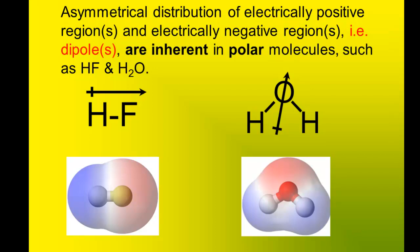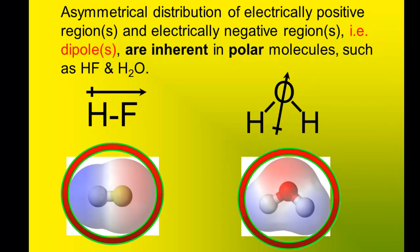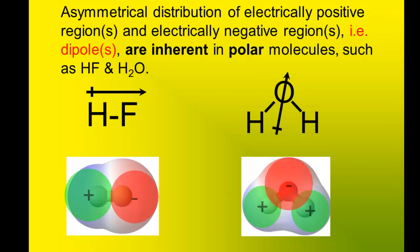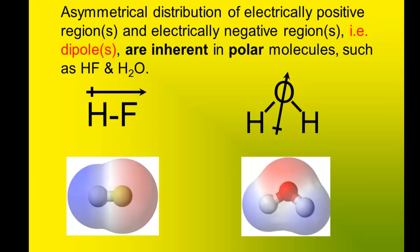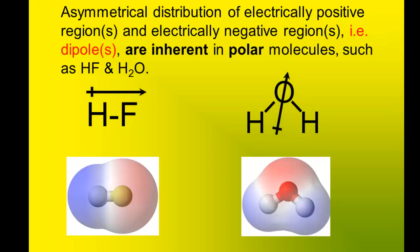Asymmetrical distribution of electrically positive regions and electrically negative regions — i.e., dipoles — are inherent in polar molecules. Hydrogen fluoride and water are two examples. There are Lewis structures of HF and water, and below each Lewis structure is an electrostatic potential map. These maps show electrically positive regions and electrically negative regions. Using electronegativity values, we can predict where the electrically negative regions would reside in a molecule. The arrowhead points towards the electrically negative region, and the cross at the other end of the arrow resides in the electrically positive region. In addition to arrows with crosses, delta symbols can also be used to show where the electrically positive and electrically negative regions are in the molecule.